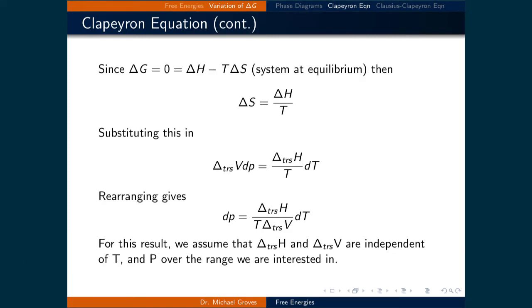To continue with this derivation, we will recall that the change in Gibbs free energy is still equal to zero because we are at a phase boundary. This means that zero equals the change in enthalpy minus the temperature times the change in entropy. As such, the change in entropy equals the change in enthalpy divided by the temperature.